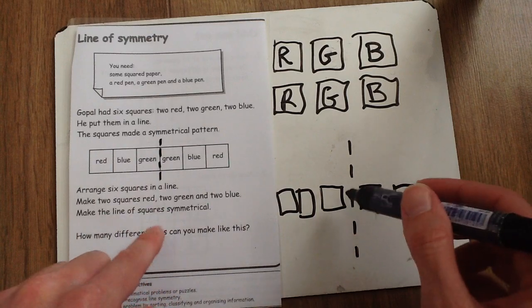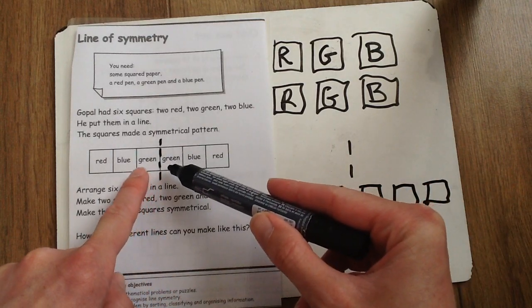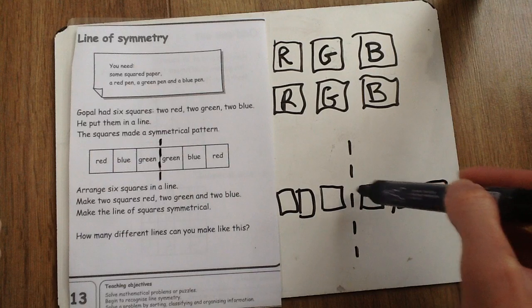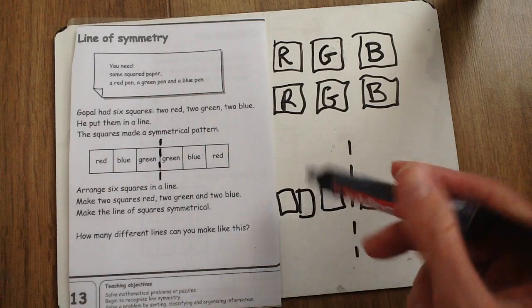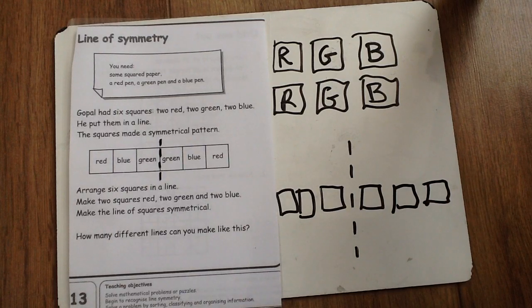And then they have to be in a pattern. In the example, the two greens were nearest to the dotted line in the middle. And it says, how many different lines can you make like this? Best of luck and I'll post the answer on Friday. Bye.